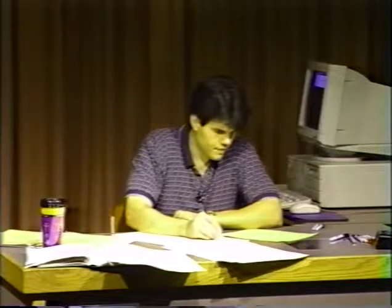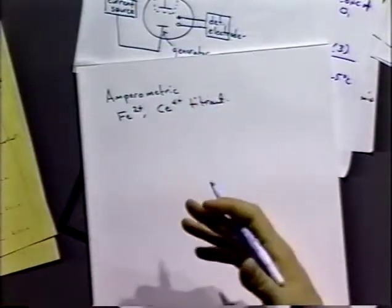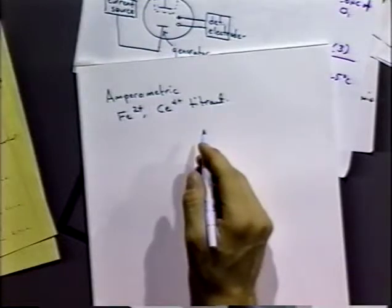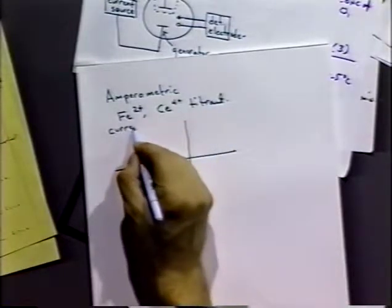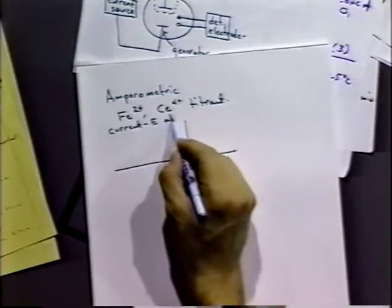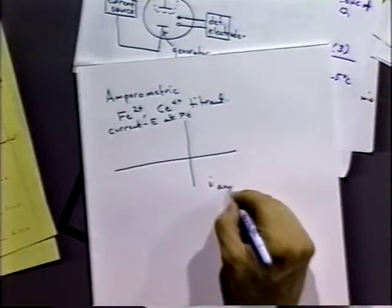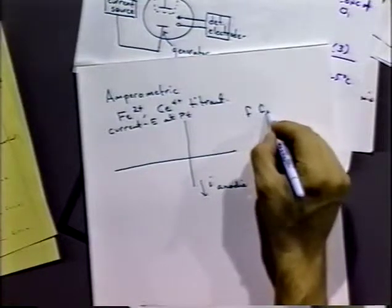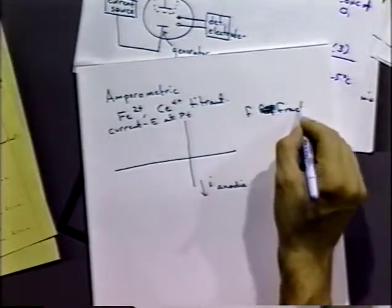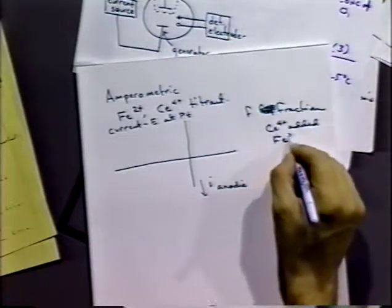Let's consider the case of iron(II) using the in-situ generated cerium(IV) titrant. We have cerium(III) in solution, but we're generating in-situ the cerium(IV) which immediately reacts with the iron(II) in the system. We're going to draw current anodic as being down, and we'll use a term F, which is the fraction of cerium(IV) added to initial iron(III).